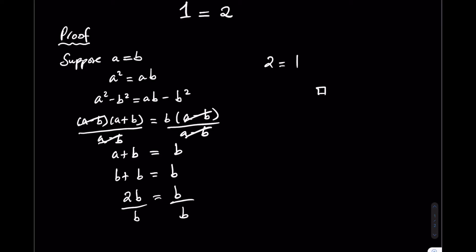Okay, ladies and gents, the mistake is over here. You can't divide by A minus B because we have assumed that A is equal to B. Hence, A minus B is just 0 and you can never divide by 0.